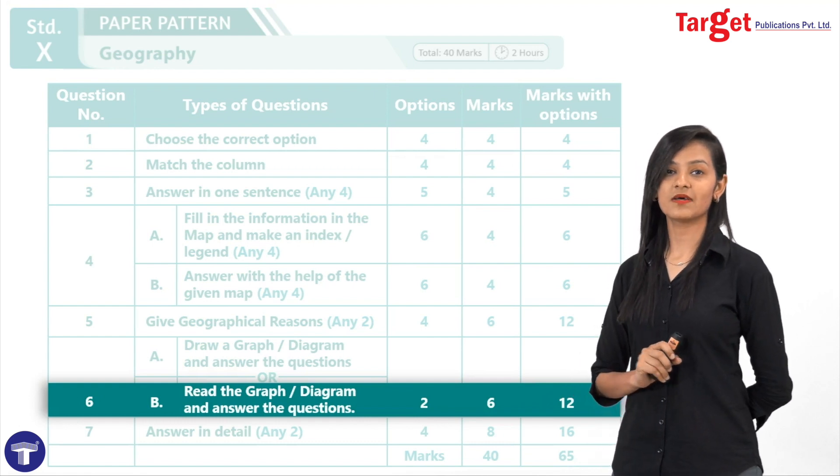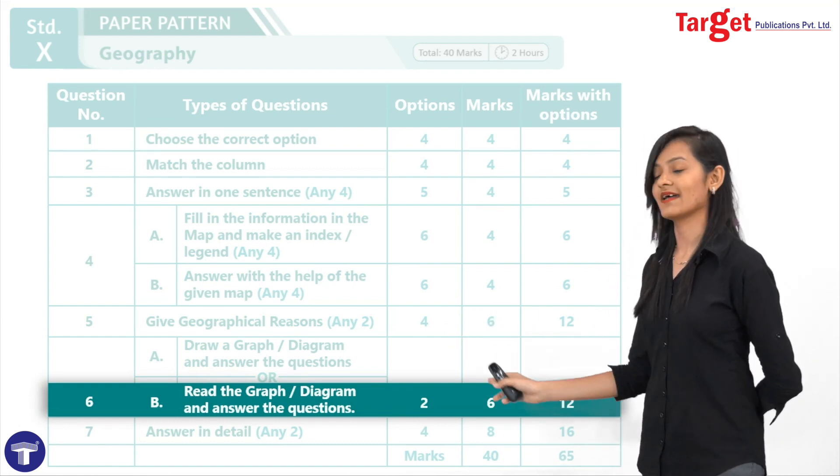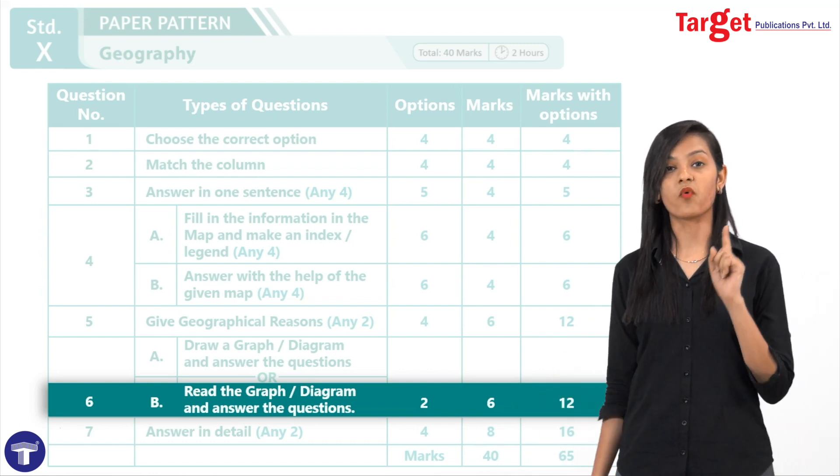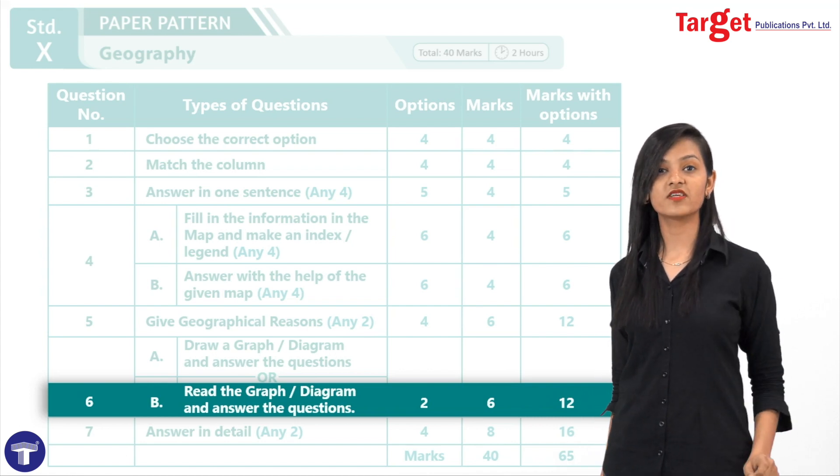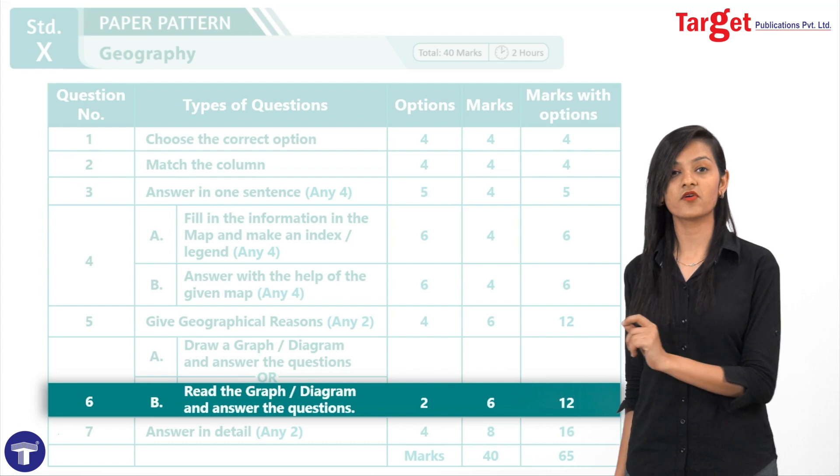Now, next is question number 6B, this is based on read the graph or diagram and answer the questions. Dear students, you will be asked six questions for one mark each, all of which are compulsory in nature. You have to opt for all the six.